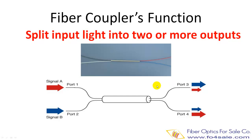Hello everyone, today we will talk about fiber optic couplers. Fiber optic couplers are used to split the input light signals into two or more outputs. They are called splitters in this case. The top picture shows an actual 2x2 fiber coupler product. It has two inputs and two outputs. The bottom picture shows that each input signal is split into two output legs, so each output is a mix of both signal A and signal B.